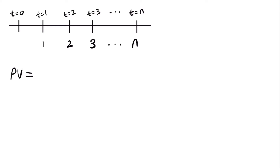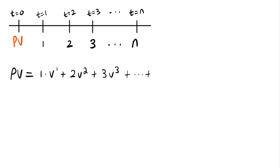The present value equals that first payment of $1 times the present value factor to the first power, since we need to bring that payment back to the valuation date at time zero. Then plus two times the present value factor squared for the second payment, since it needs to be brought back two years. Then plus three times the present value factor to the third power, continuing until we have n times the present value factor to the power of n.